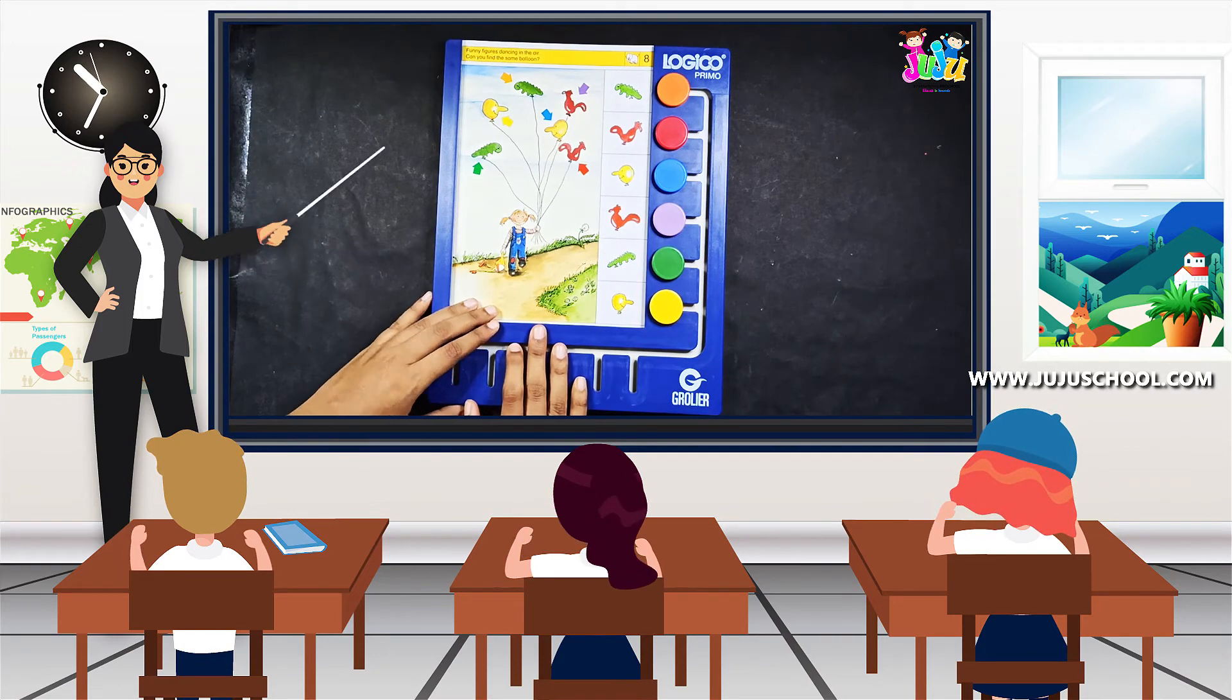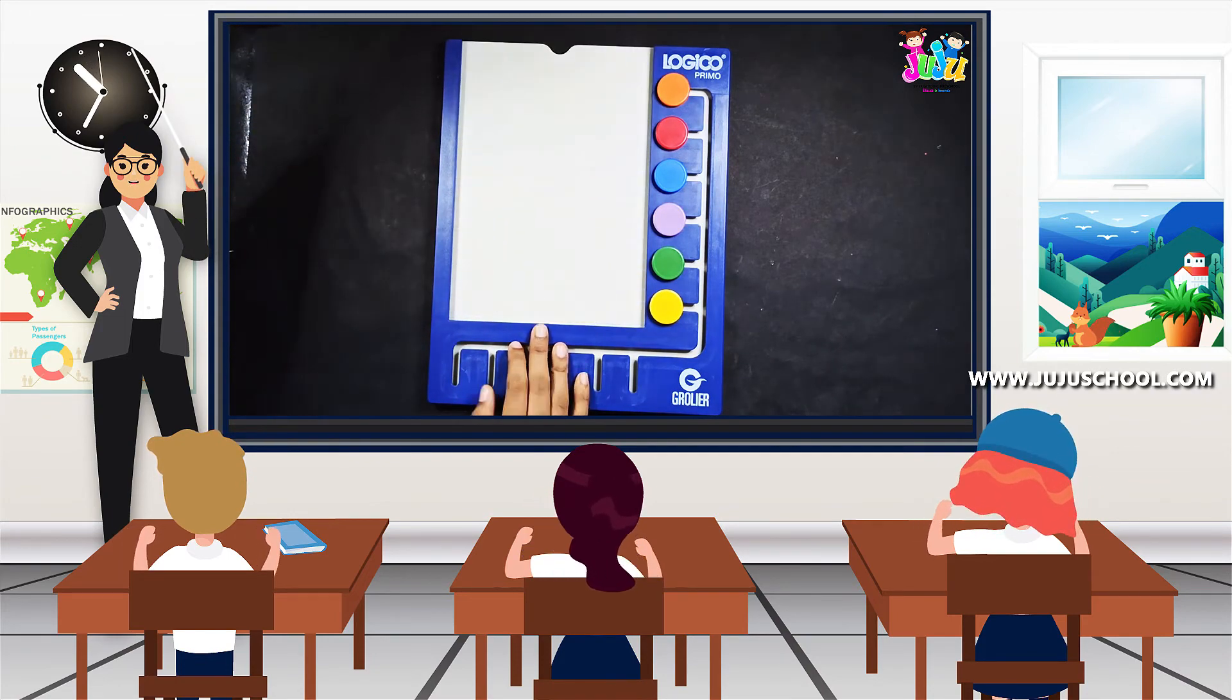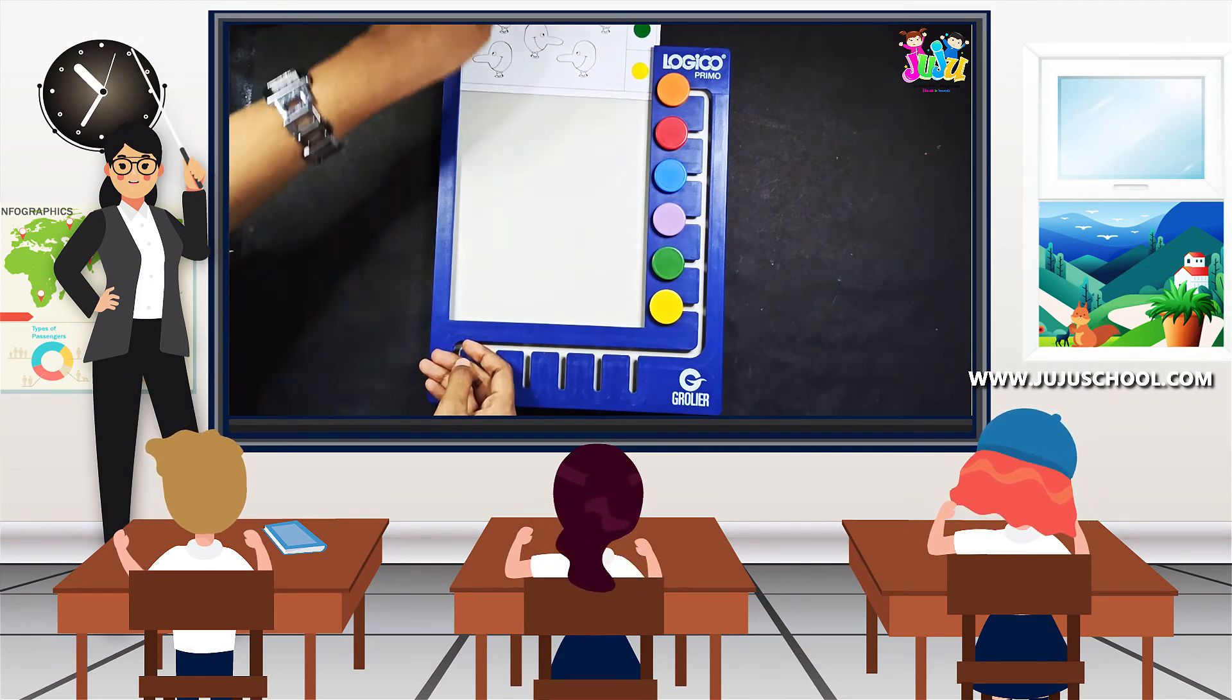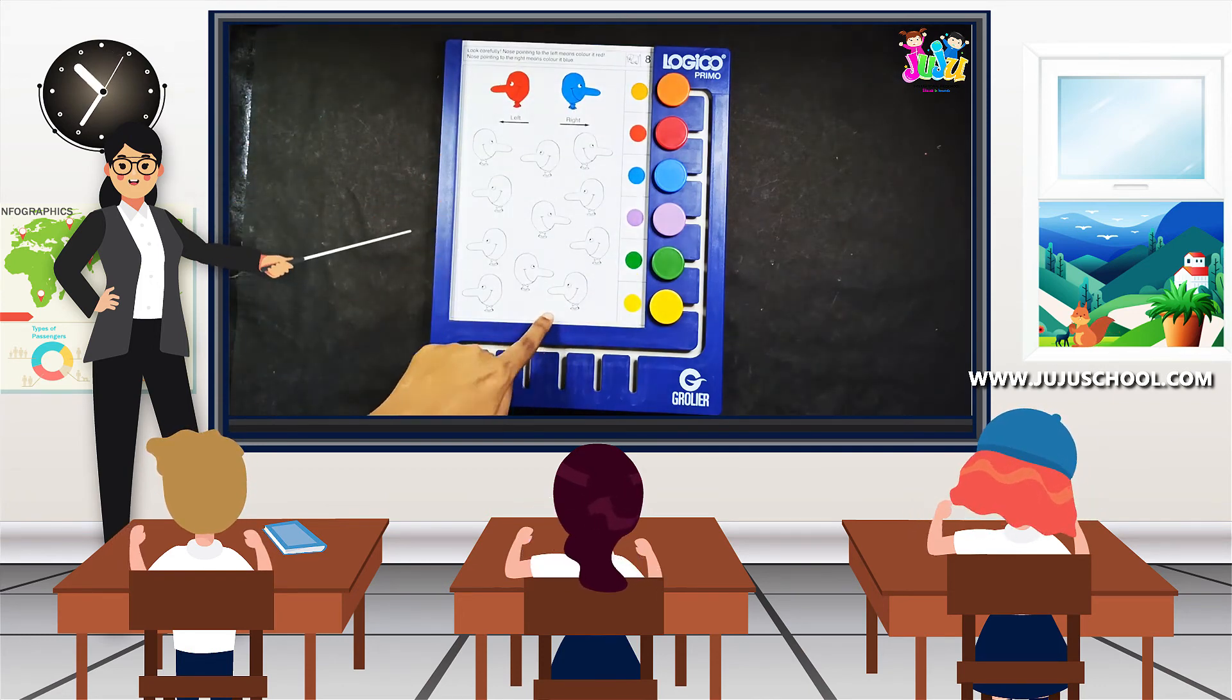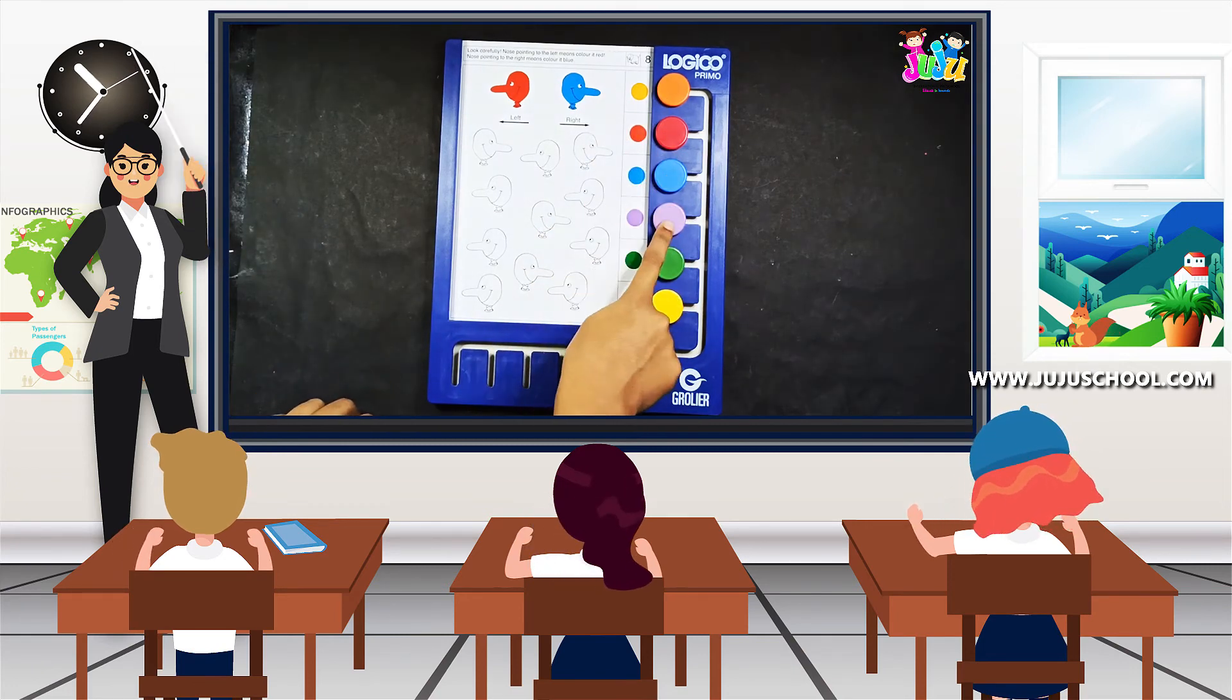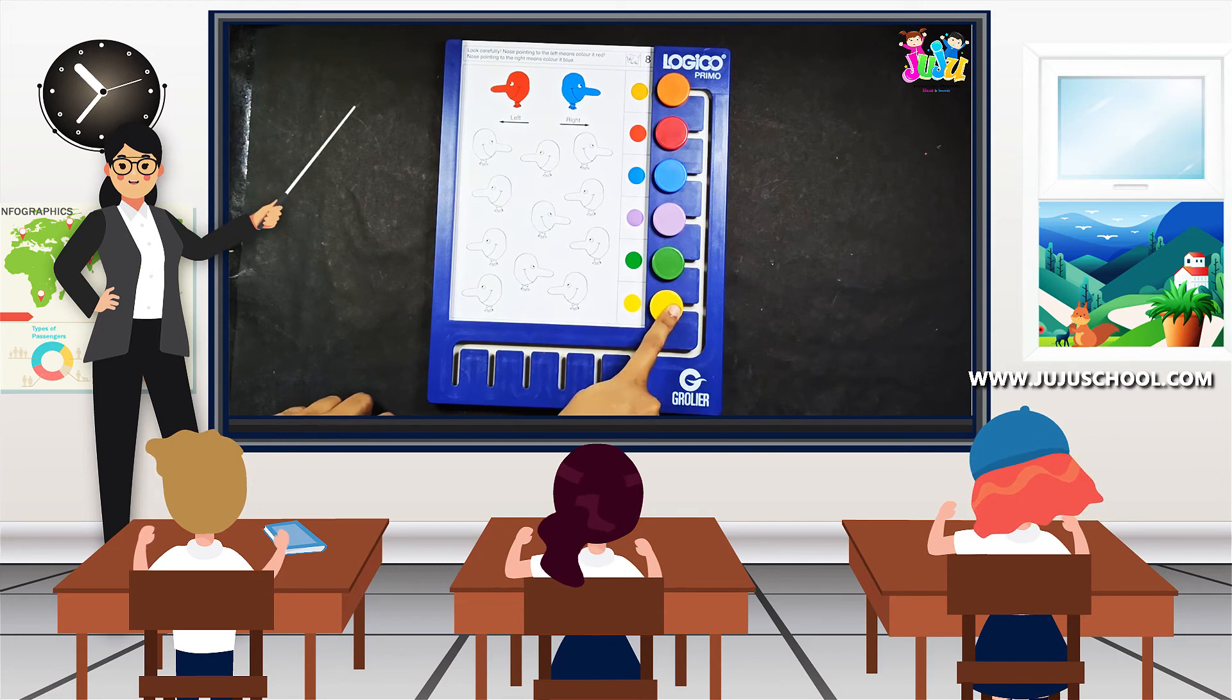Kids, we're done and now we're going to check the answer. Remove the sheet and we'll check it. Orange, red, blue, purple, green, and yellow.